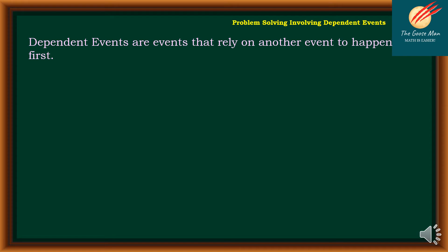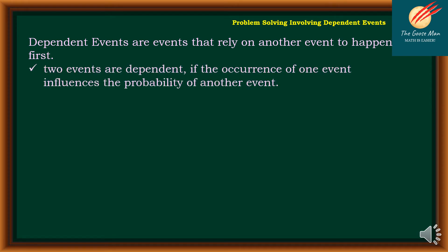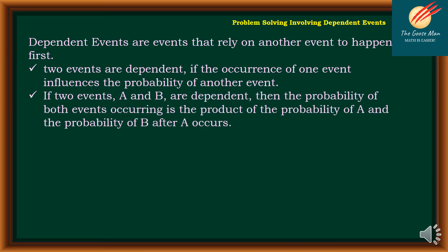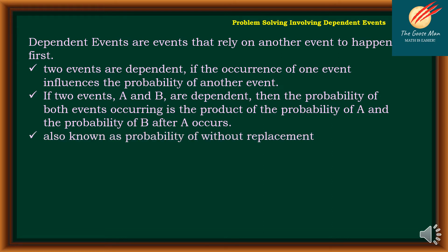Dependent events are events that rely on another event to happen first. Two events are dependent if the occurrence of one event influences the probability of one another. If two events A and B are dependent, then the probability of both events occurring is the product of the probability of A and the probability of B after A occurs. This is also known as the probability without replacement.